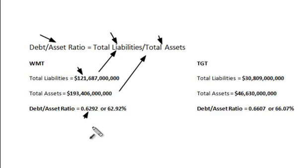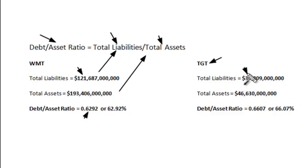You always want to use the same industry whenever you're comparing. In this particular case, I've given you Target's information here. You can see total liabilities of 30.8 billion and total assets of 46.6 billion.